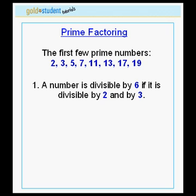In the first tutorial we learned some tricks for how to find out if a number is divisible by 2, by 3, or by 5. Here we'll learn some additional tricks. The first one is that a number is divisible by 6 if it is divisible by both 2 and by 3 — in other words, if its last digit is even and if the sum of its digits is divisible by 3.